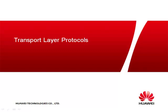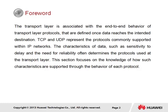Here we introduce transport layer protocols for TCP/IP in support of building communication between applications. The transport layer is associated with the end-to-end behavior of transport layer protocols that are defined once data reaches the intended destination. TCP and UDP represent the protocols commonly supported within IP networks. The characteristics of data, such as sensitivity to delay and the need for reliability, often determines the protocols used at the transport layer. This section focuses on the knowledge of how such characteristics are supported through the behavior of each protocol.